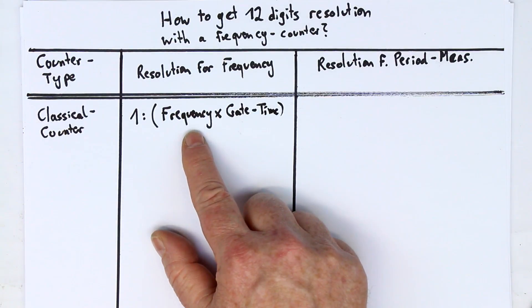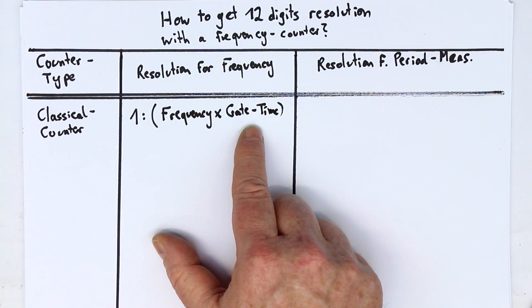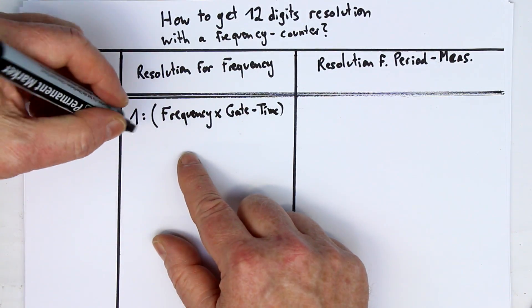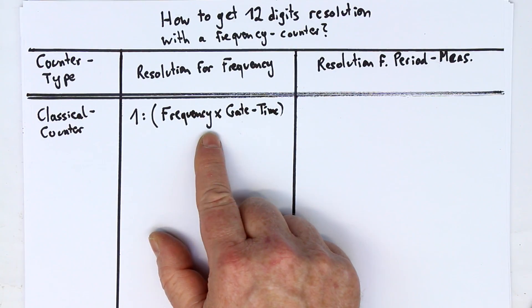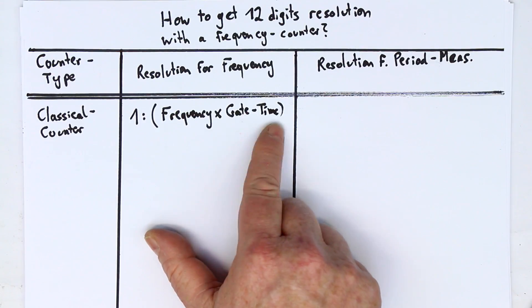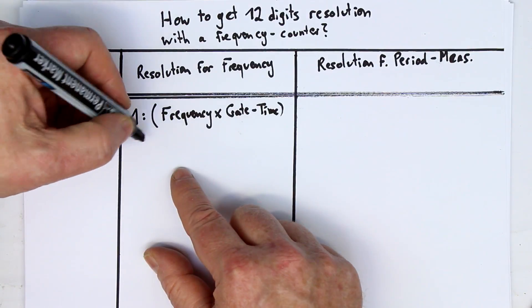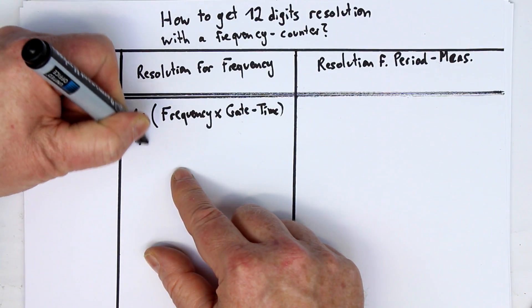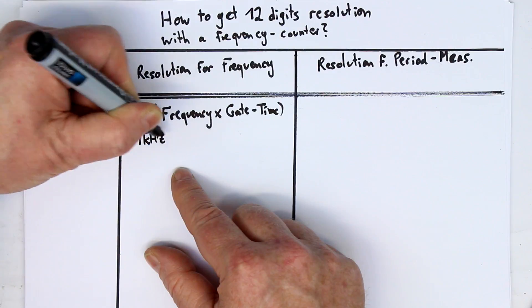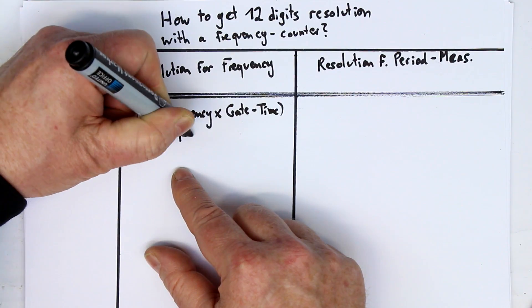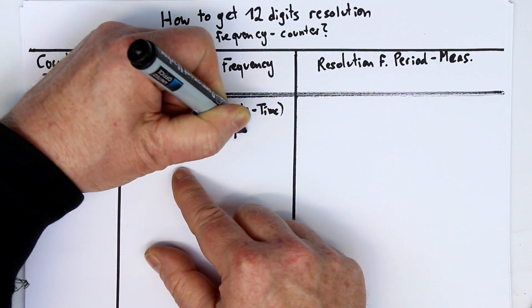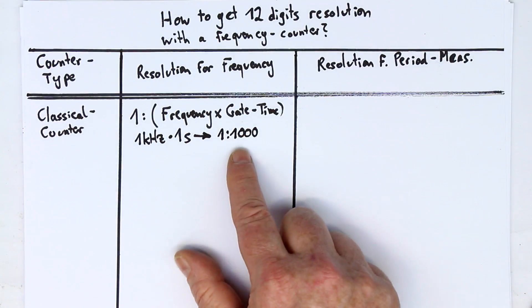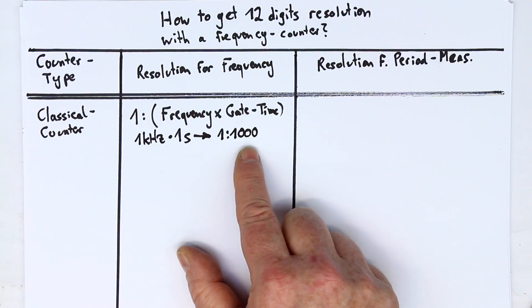The frequency measured in Hertz and the gate time measured in seconds. Now, what is typical? As you can see, the resolution is not constant, but it depends on your frequency when you have a fixed gate time. Now, let's take a typical example of, let's say we measure 1 kilohertz with a gate time of 1 second, and we only have a resolution of 1 in 1000, or just three significant digits.